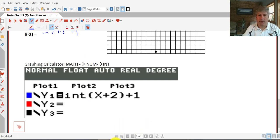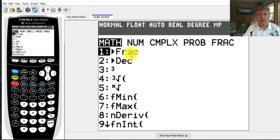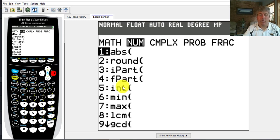I'm going to pull up my graphing calculator here. I'll do math, then cursor over to the num category. Our greatest integer function here is going to be 5.